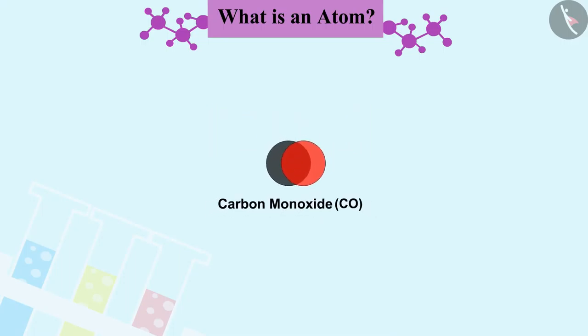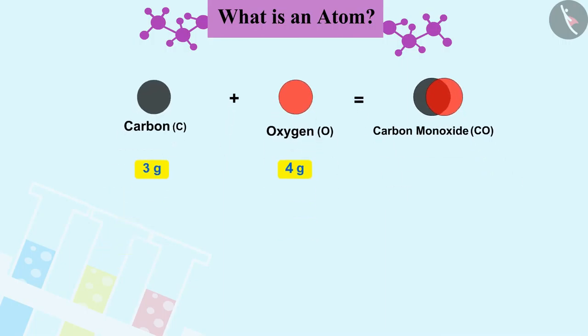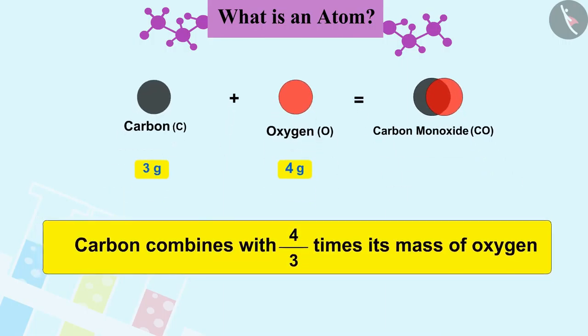Carbon monoxide (CO) is made up of carbon and oxygen. It is made by combining 3 grams of carbon and 4 grams of oxygen. In other words, we can say that carbon combined with 4/3 times its mass of oxygen.